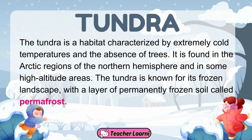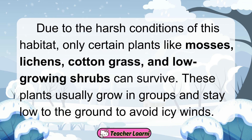The tundra is a habitat characterized by extremely cold temperatures and the absence of trees. It is found in the Arctic regions of the Northern Hemisphere and in some high-altitude areas. The tundra is known for its frozen landscape, with a layer of permanently frozen soil called permafrost. Due to the harsh conditions of this habitat, only certain plants like mosses, lichens, cotton grass, and low-growing shrubs can survive. These plants usually grow in groups and stay low to the ground to avoid icy winds.